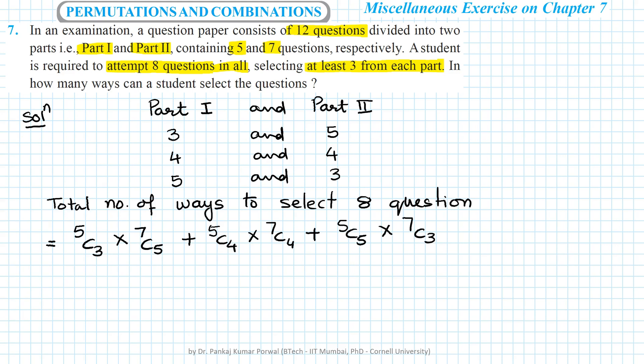This I can simplify to 5C2 × 7C2 + 5C1 × 7C3 + 5C0 × 7C3. And this I can do because nCr equals nC(n-r).